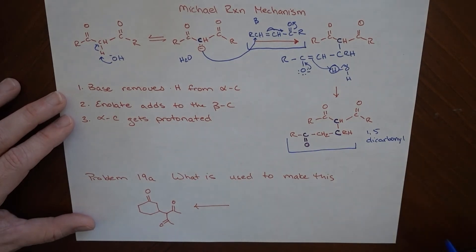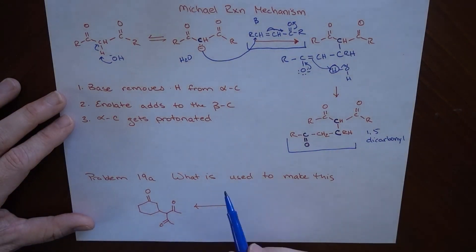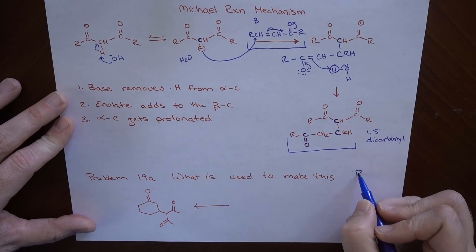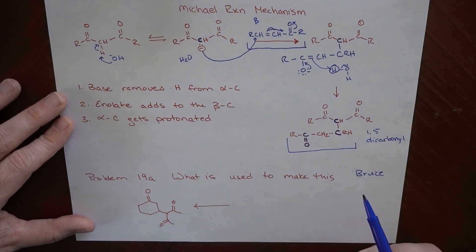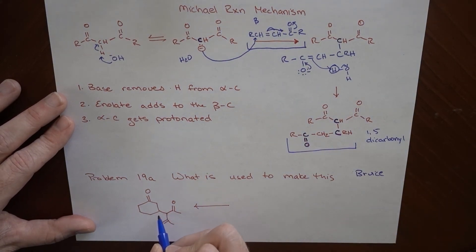So what kind of problems can you expect to see on something like that? Well, here's an example, problem 19A in Bruce. And the question is, if this is my product, then what was used to make it? So this right here, that's the new bond.